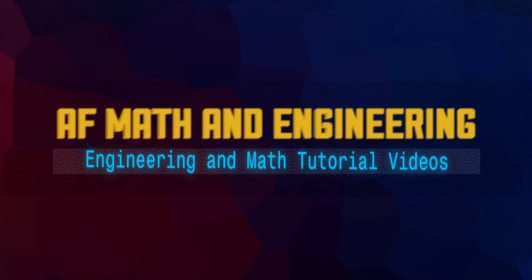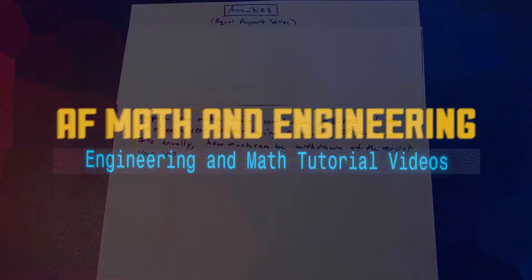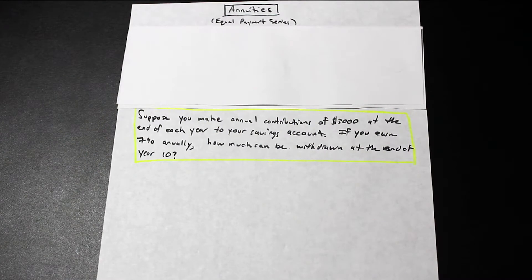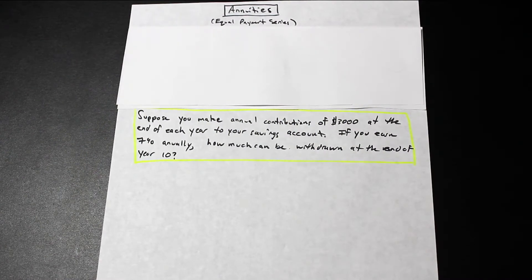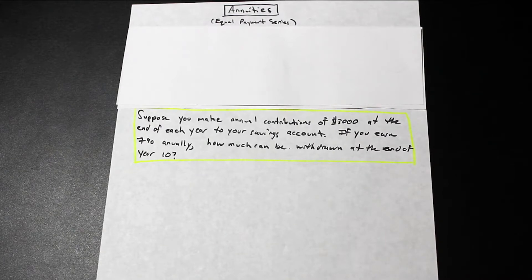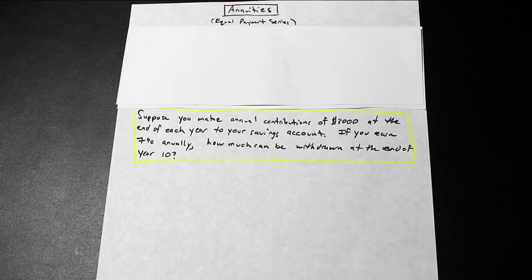Hey guys, welcome back. Fred here from AF Math and Engineering. We're continuing on our series of engineering economics videos, and we're going to do a really simple quick video for you here, but it's something important because this is usually what the first half of the course is dedicated to, which is figuring out cash flow diagrams and finding present and future values.